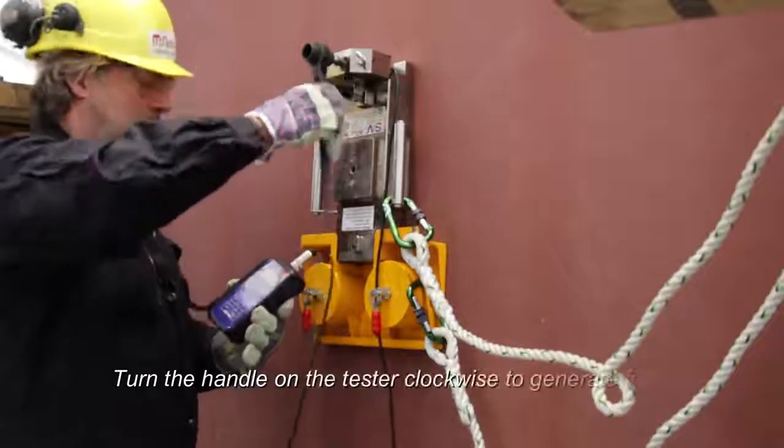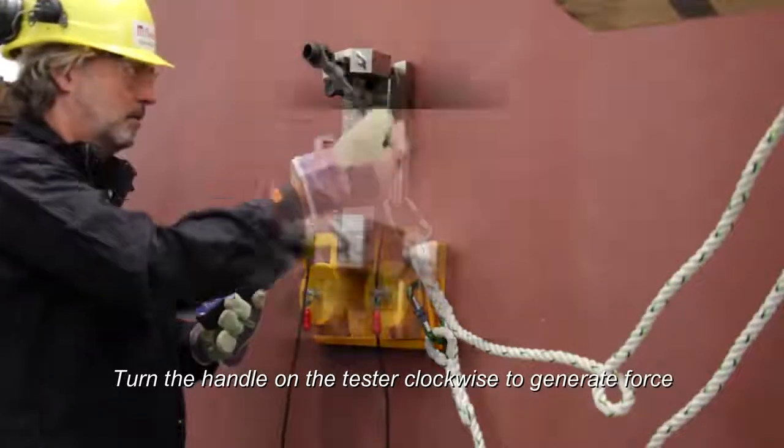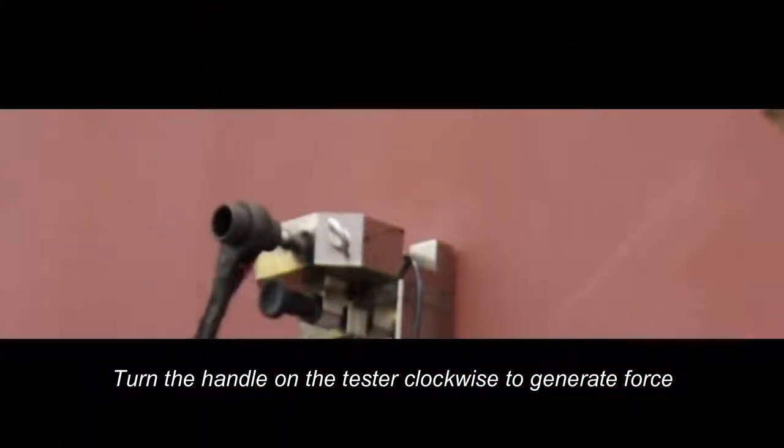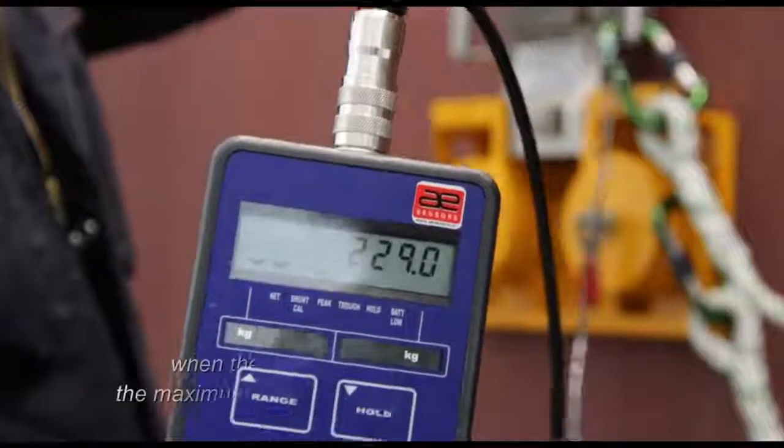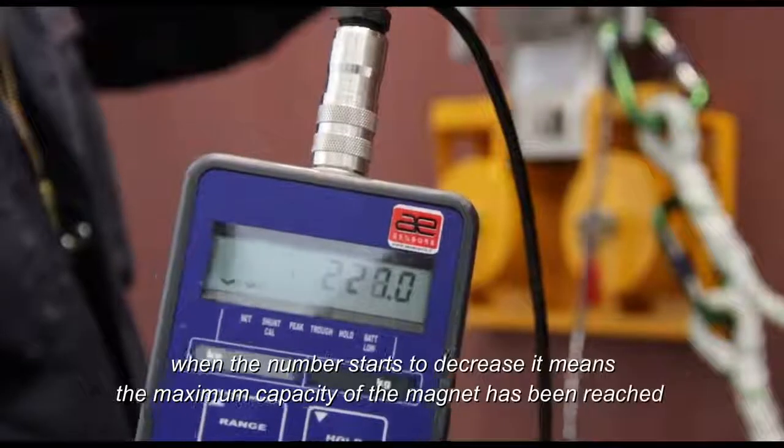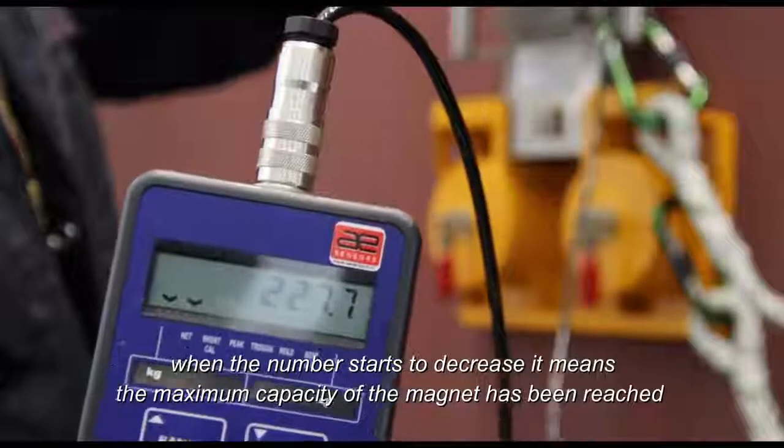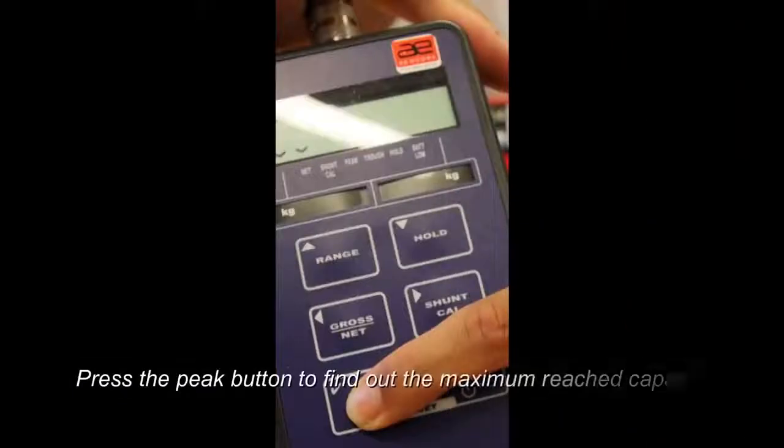Turn the handle on the tester clockwise to generate force. The number on display will gradually increase accordingly. When the number on the display decreases, it means the maximum capacity has been reached. Press the peak button to find out the maximum reach capacity.